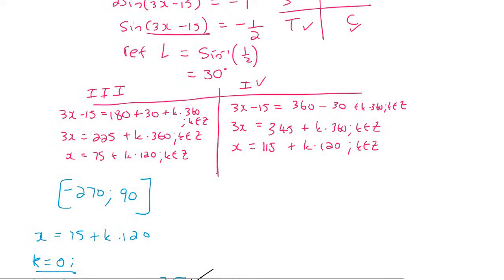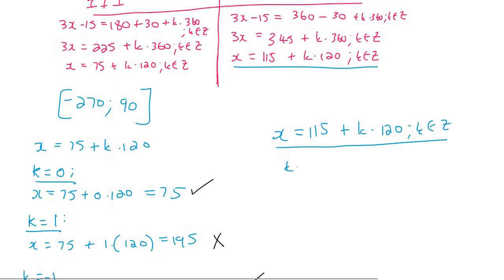Now we need to go do the same type of technique, but using this now. So let's quickly write it down. So I'm going to start with k equals to 0. And so that's going to be 115 plus 0 times 120, which is 115. Now that's not a good answer because it doesn't fit in this interval. So we'll say no. It's too big.